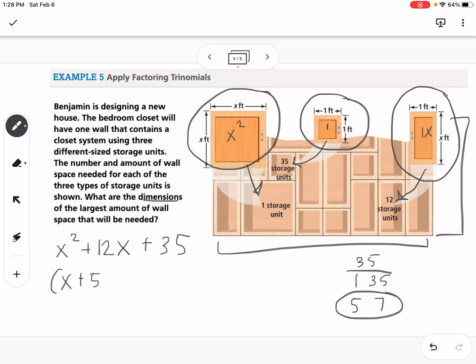So the dimensions of the wall would be x plus 5 by x plus 7. So whatever x is, those would be my dimensions of the wall. So for instance, if x equaled 10, then my wall would need to be 15 feet by 17 feet. Okay? So that is factoring trinomials.